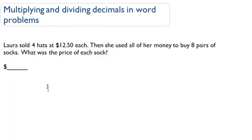This word problem reads: Laura sold four hats at $12.50 each. Then she used all that money, so the amount of money that she made selling hats, to buy eight pairs of socks. What was the price of each sock? That's the question.